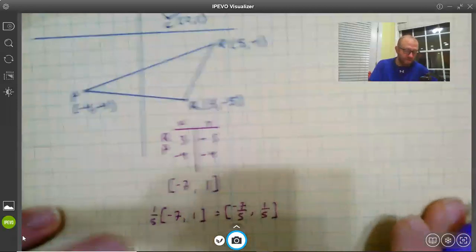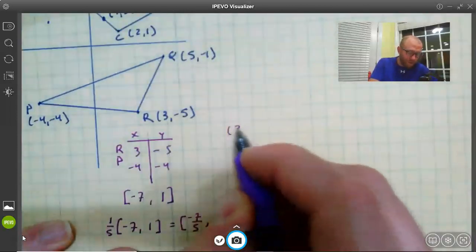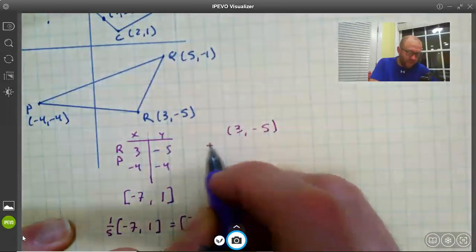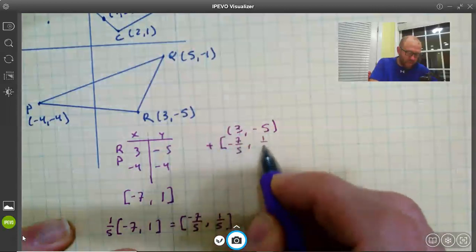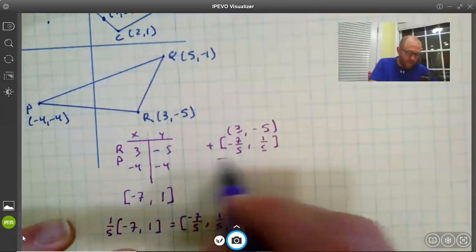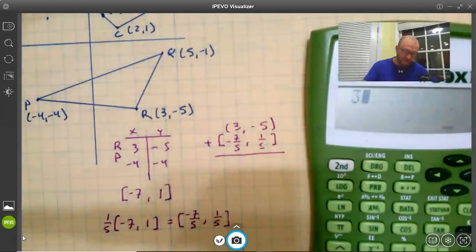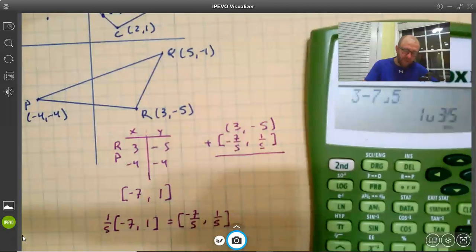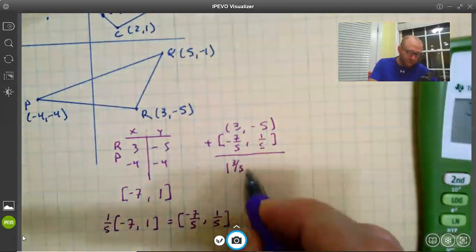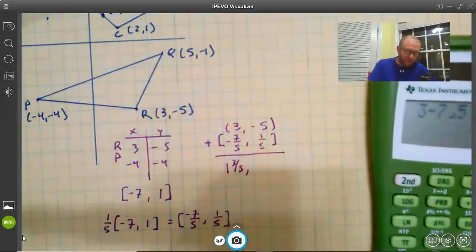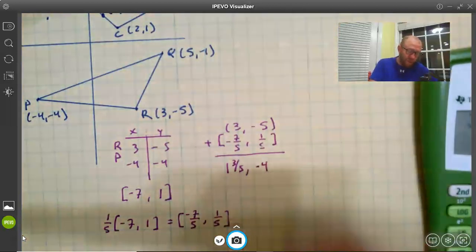Now we just have to add that vector to point R. So I'm going to start with 3, negative 5, and we're going to add negative 7/5ths, 1/5th. Let's see what we end up with here. 3 plus negative 7/5ths, so 3 minus 7/5ths is 1 and 3/5ths. I'm going to leave that as a mixed number because it's going to be easier to find it on the grid. And then negative 5 plus 1/5th is negative 4 and 4/5ths.